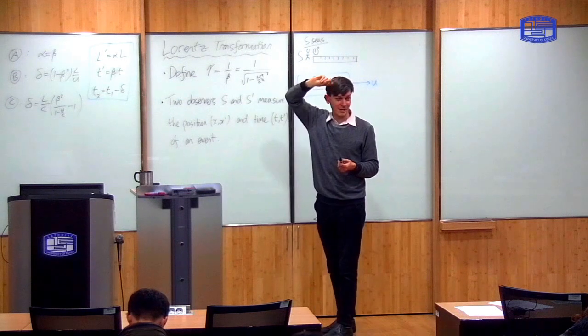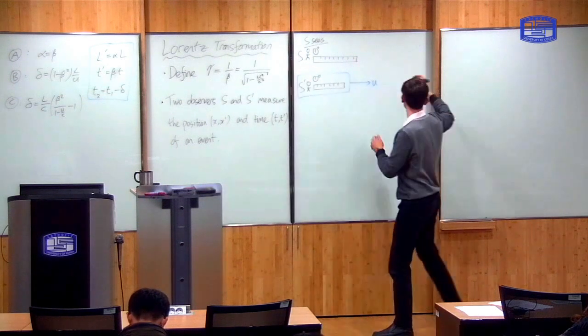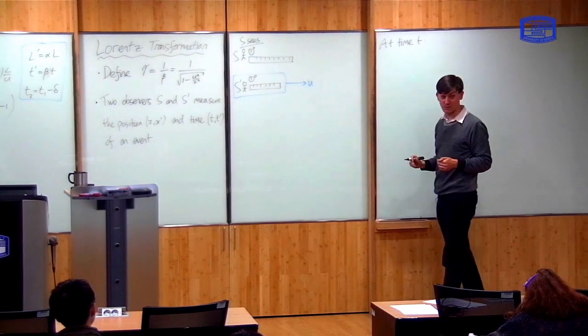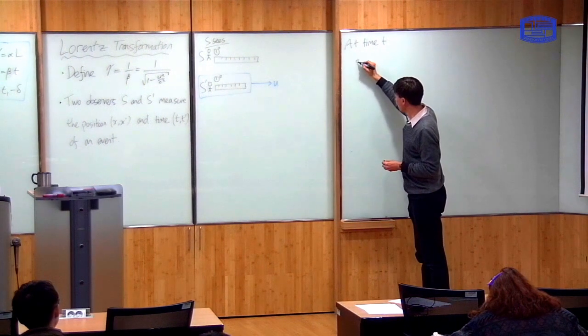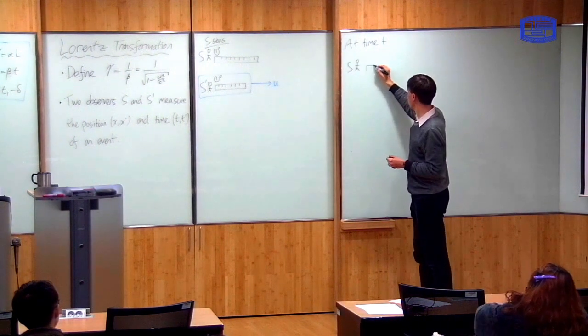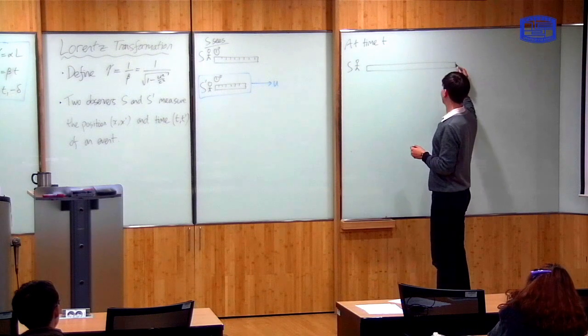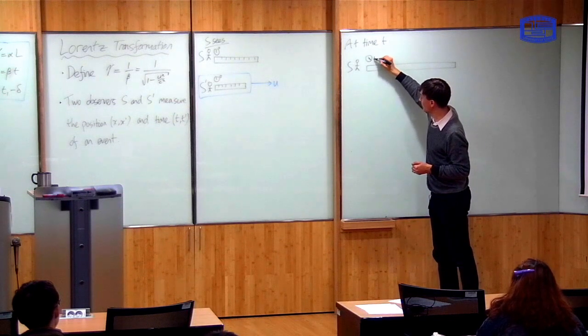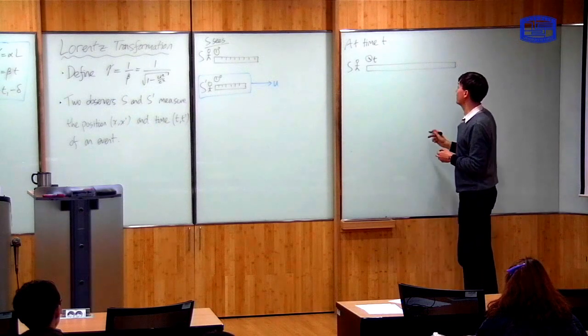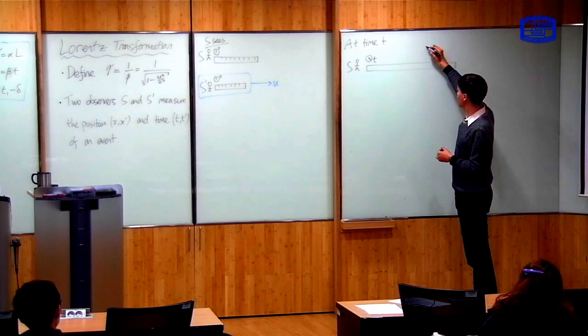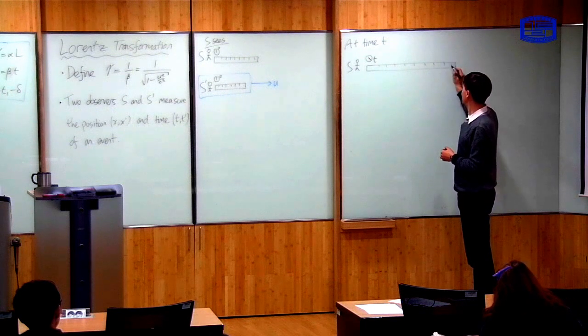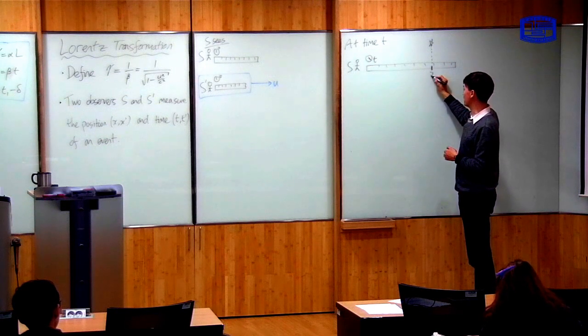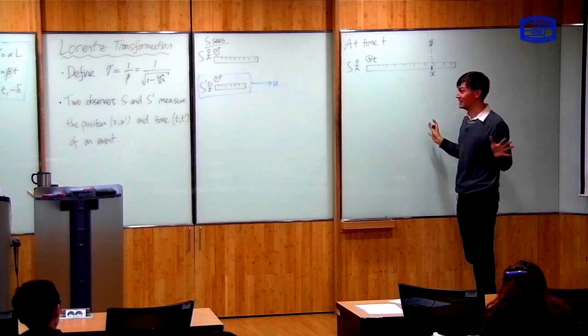So that's the original situation. Now, something happens at time t. So at time t, what does the same situation look like? So here's S again. He's got a long ruler and a clock which is measuring the time t. Now, he sees an event at position x. So on his ruler, something happens over here, and he measures the position at which it happens, and it happens at position x. So that's it for S.